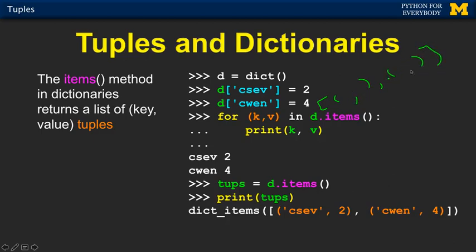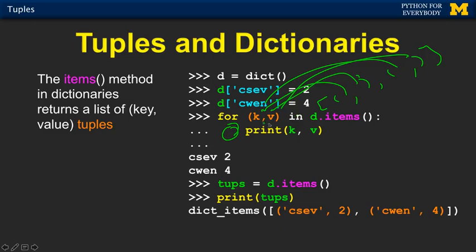So what happens is the first goes into k and the second goes into v — this is like an assignment statement for the first tuple. Then it runs the loop, and then the second one gets put in k and v, then it runs the loop again. That's how we construct two-iteration-variable for loops using tuples, because that turns out to be a tuple assignment each time through the for loop.